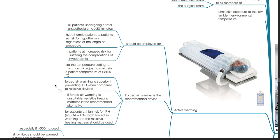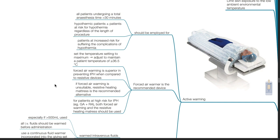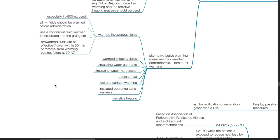Forced air warming is the recommended device. Set the temperature to maximum and adjust to maintain a patient temperature of 36.5 degrees Celsius or more. Forced air warming is superior in preventing inadvertent perioperative hypothermia compared to resistive devices. If forced air warming is unsuitable, a resistive heating mattress is the recommended alternative. For patients at high risk, both forced air warming and the resistive heating mattress should be used. Alternative active warming measures may maintain normothermia in addition to forced air warming, for example: warm intravenous fluids, warm irrigating fluids, circulating water garments, circulating water mattresses, radiant heat, gel pad surface warming, insulated operating table warmers, and resistive heating.